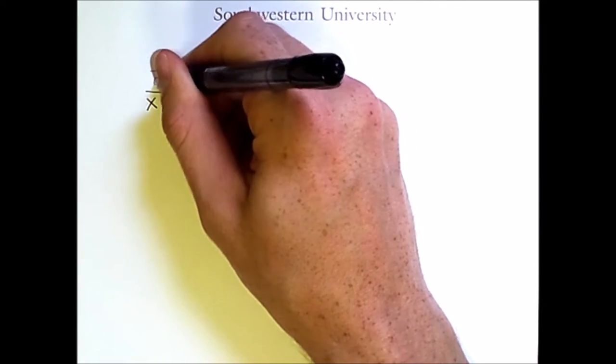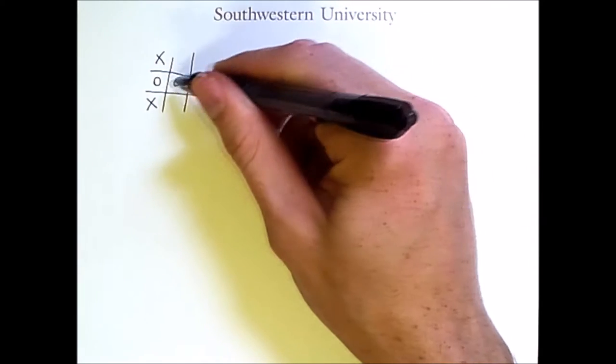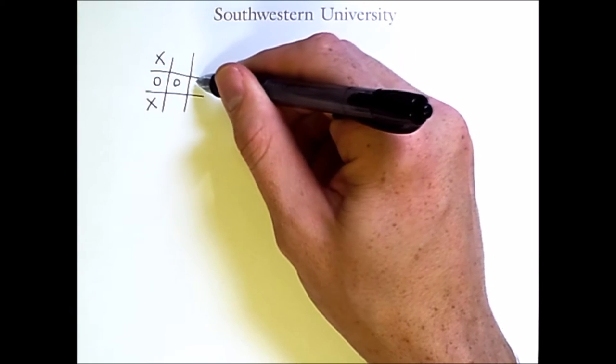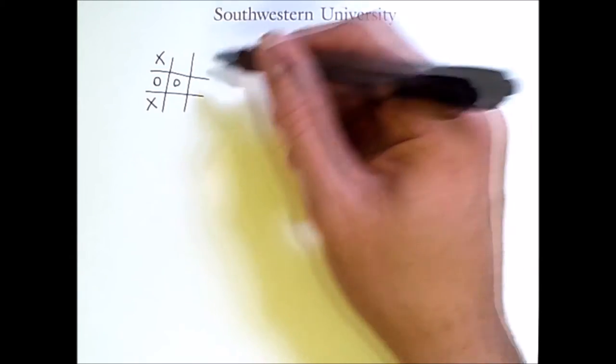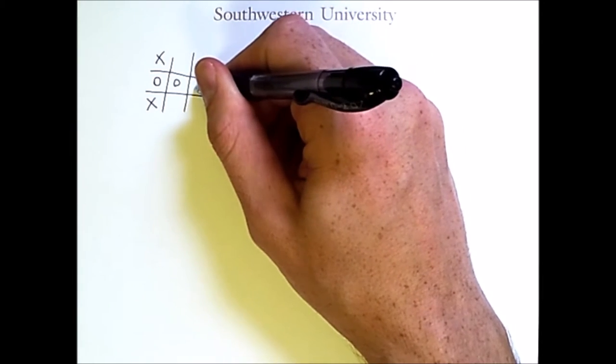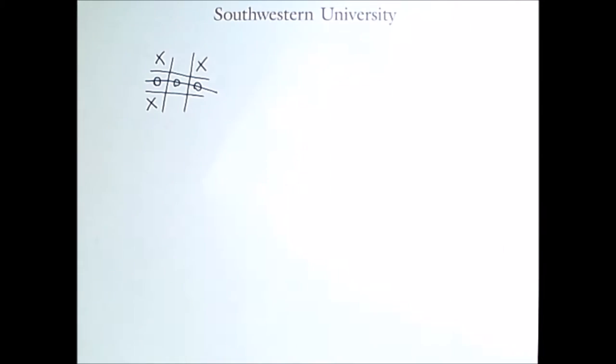If the players take turns like this, you'll see that O now has a chance of getting three in a row. An appropriate move for X would be to place here to block that, but if X were to make a mistake and play there, then O could play in this position, get three in a row, and win. How will we search in this state space to make proper decisions?